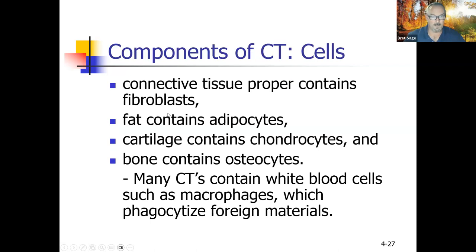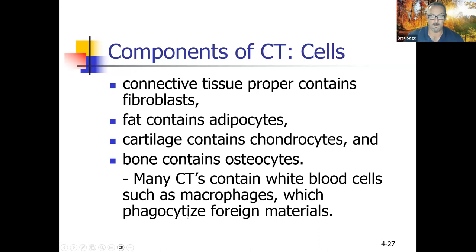Cells of connective tissue: fibroblasts produce the fibers found in connective tissue proper. Fat contains adipocytes — fat cells. Cartilage contains chondrocytes, meaning cartilage cells. Bone contains osteocytes — 'osteo' means bone, 'cyte' means cell. Many connective tissues also contain white blood cells such as macrophages, which phagocytize or swallow foreign materials like bacteria and viruses.